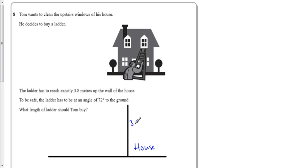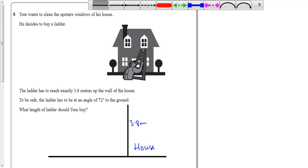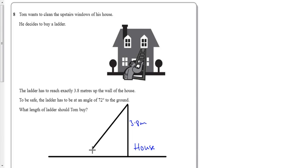This has to be 3.8 meters. The ladder is going to reach up like that, and we need this angle to be 72 degrees.